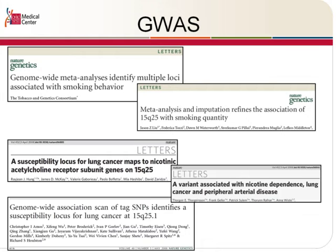This region 15Q25 also includes two other nicotinic receptor subunits, the Alpha-3 and the Beta-4 subunit. So perhaps it's not surprising that this region was identified through GWAS.